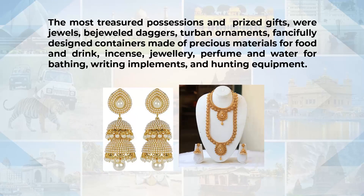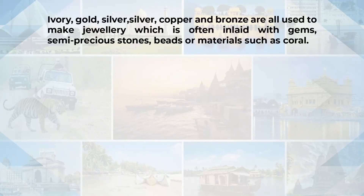The most treasured possessions and prized gifts were jewels, visual daggers, turban ornaments, fanciful design containers made of precious materials for food and drink, incense objects, jewelry, perfume and water bathing utensils. The jewelry found in India includes ankle bracelets, toe rings, nose rings as well as necklaces. Tika and shingarpatti were also popular kinds of jewelry. Other materials used along with gold and silver were ivory, copper and bronze, often inlaid with gems, semi-precious stones, beads or materials such as coral.